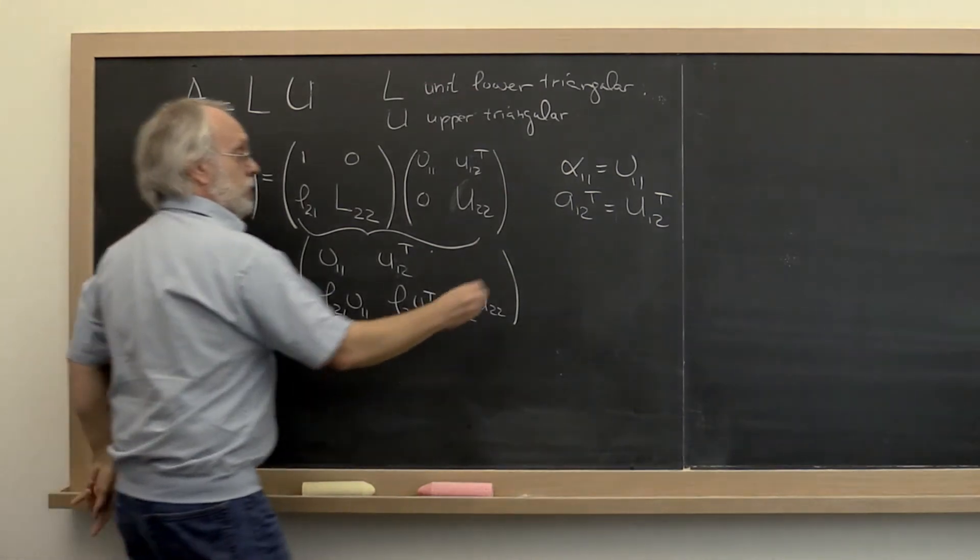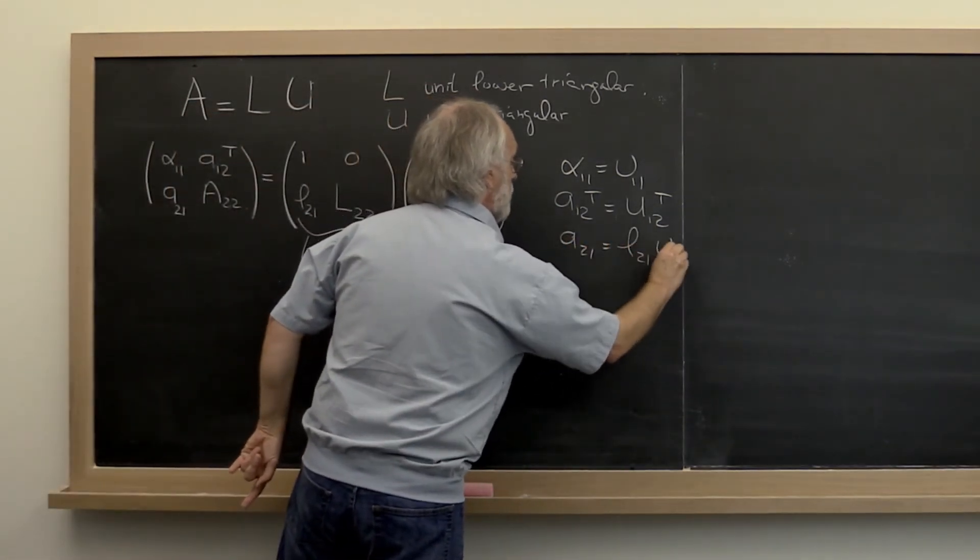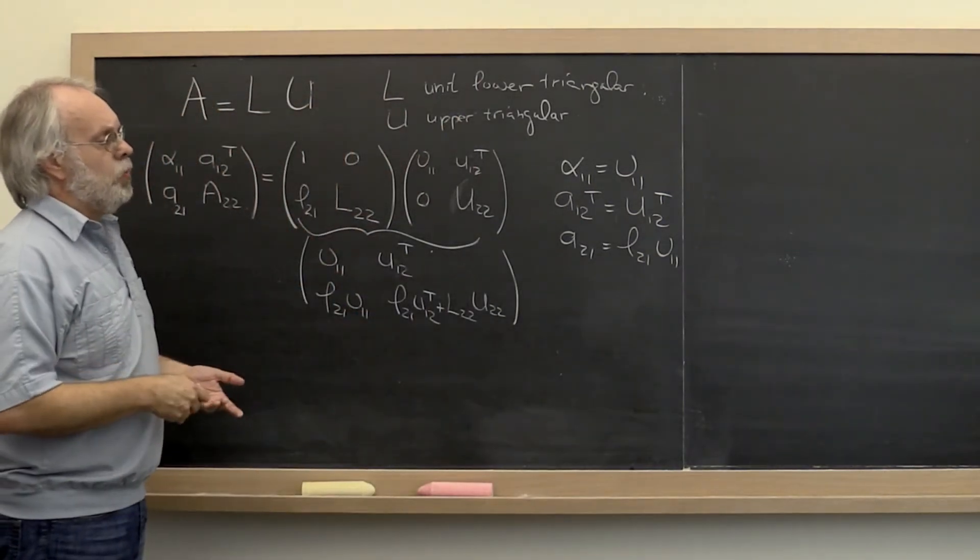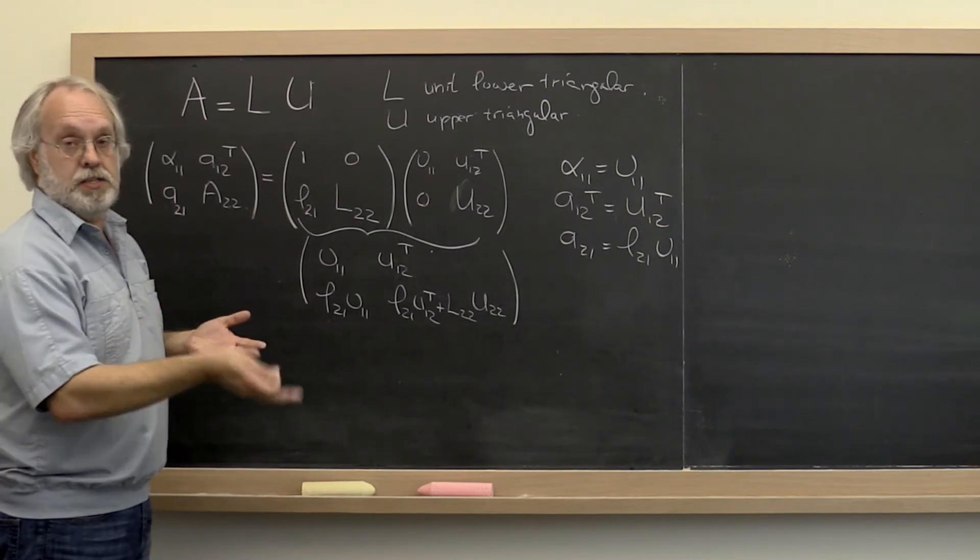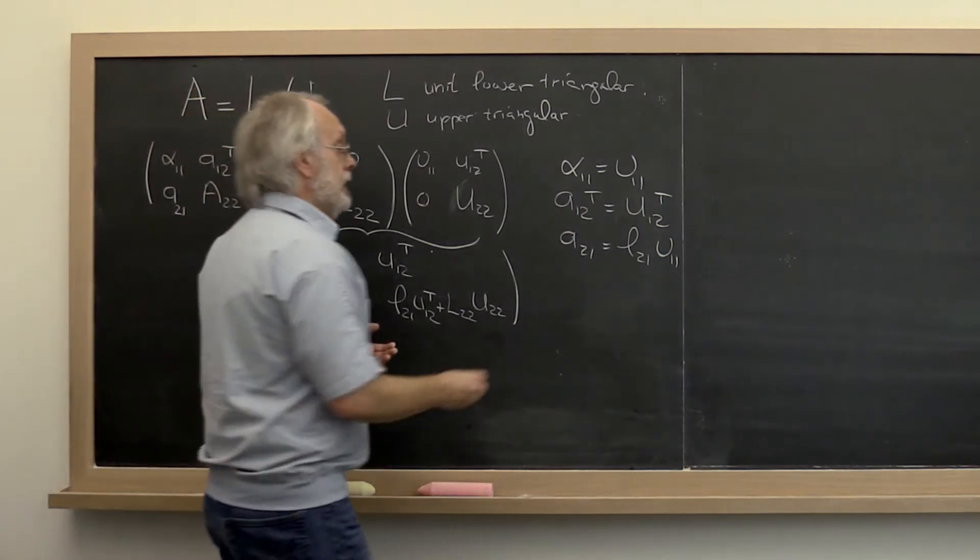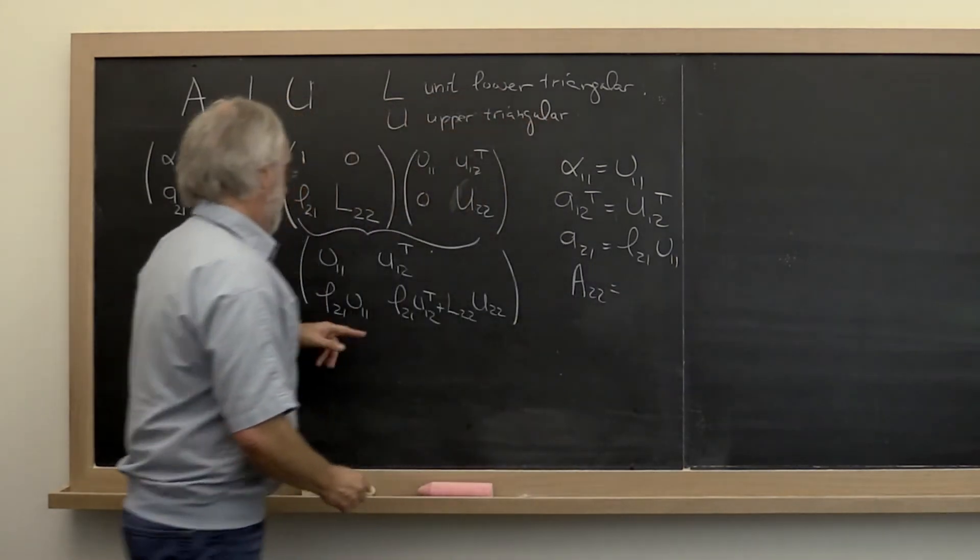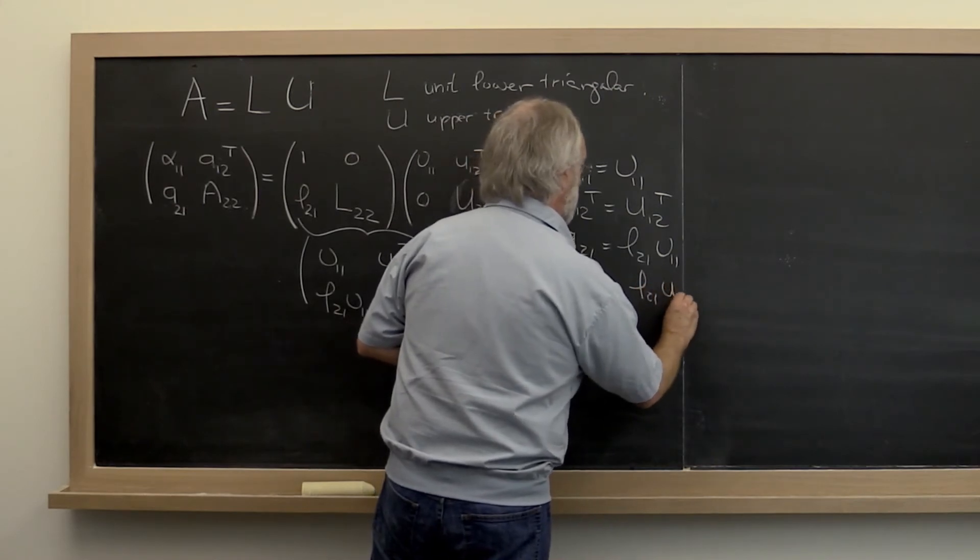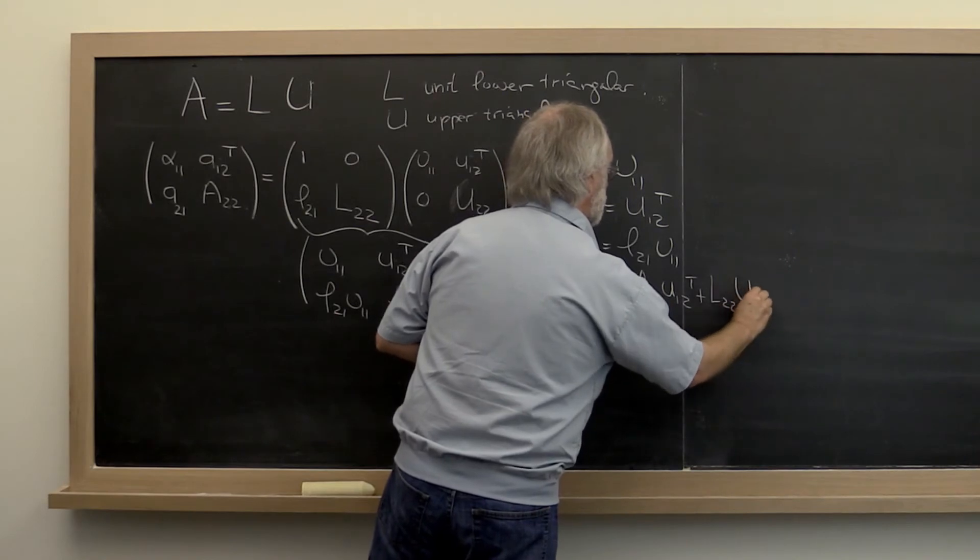A 2 1 must be equal to L 2 1 times upsilon 1 1, which we could have written as upsilon 1 1 times L 2 1 because a vector times a scalar is the same as a scalar times a vector. And finally, A 2 2 is equal to L 2 1 times U 1 2 transpose plus L 2 2 times U 2 2.